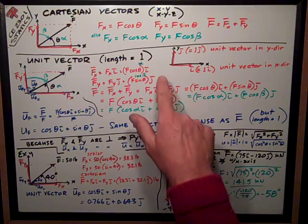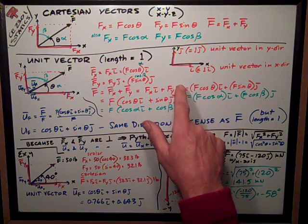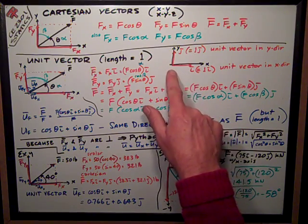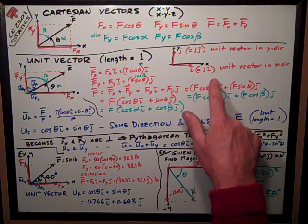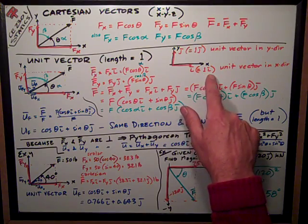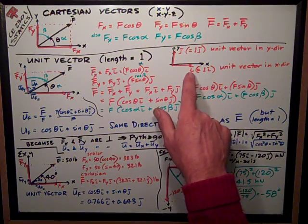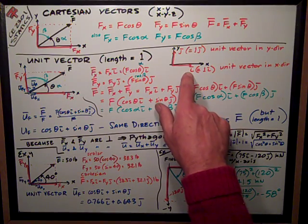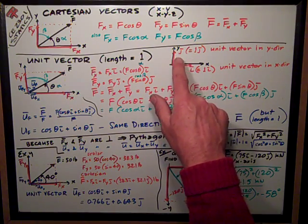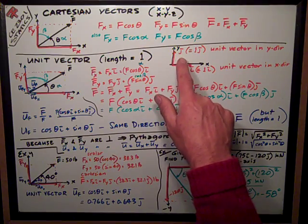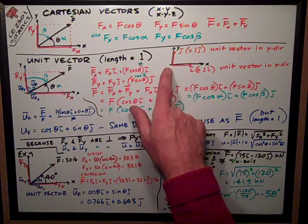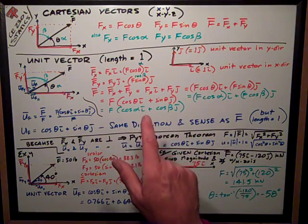In the xy coordinate system, we have these two special vectors called i and j. i is a unit vector in the x direction, length one, and we show it with the i with a bar over it because it is a vector. Similarly, the vector j with a bar over it is a unit vector in the y direction, and it has a length of one.